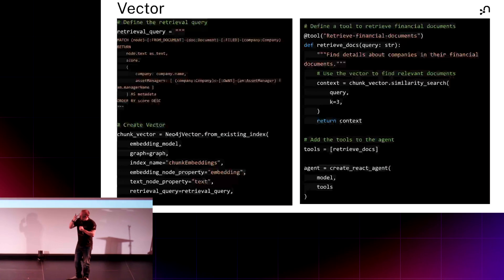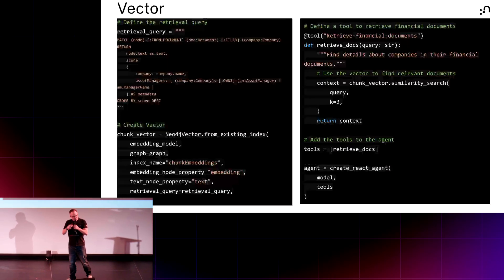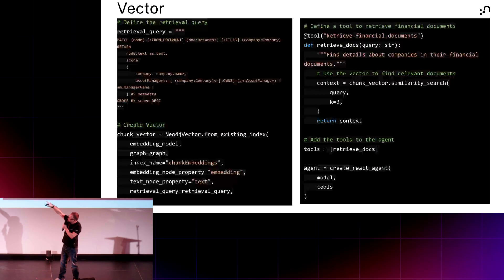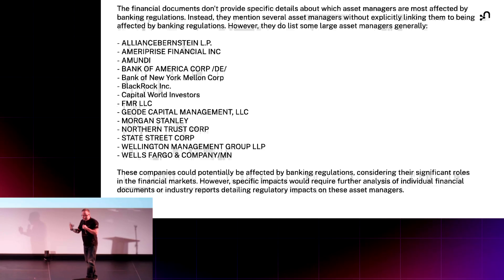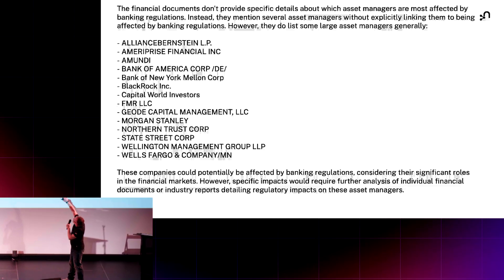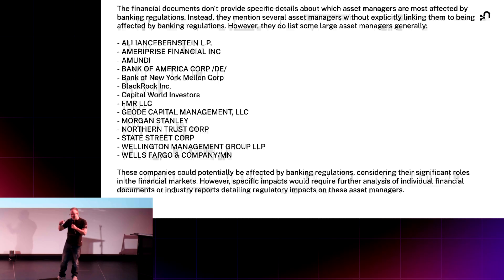We change that to a graph RAG retriever. What I've done is used my vector search to find the chunks most associated with that question, then used the graph around those chunks. In my retrieval query, I'm adding the company name and any asset managers who own companies to the context I get back — not only my vector results but also information from my graph. And I get back a very different response: a list of asset managers who were identified and returned as part of the chunks within those documents.